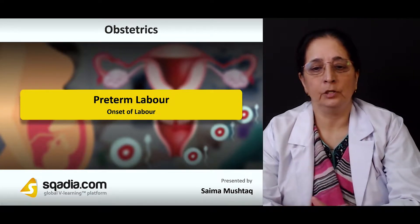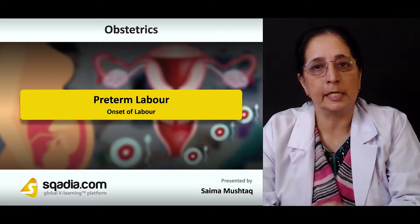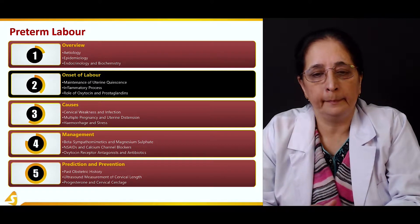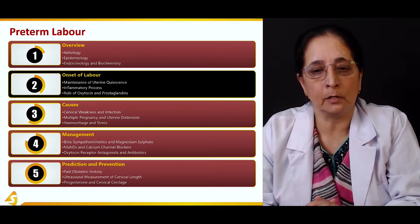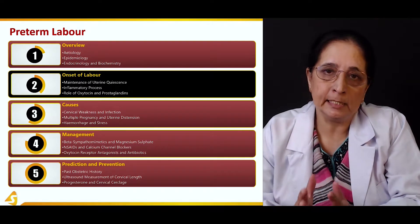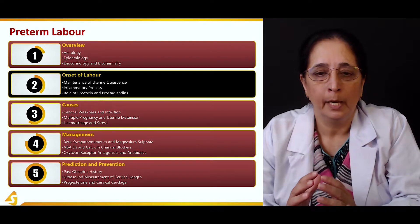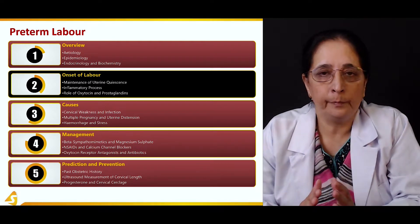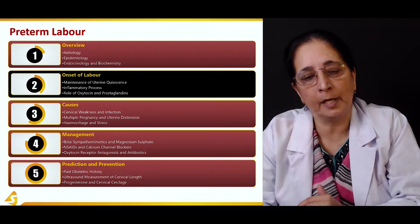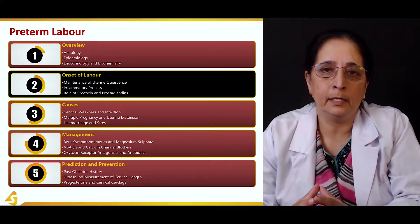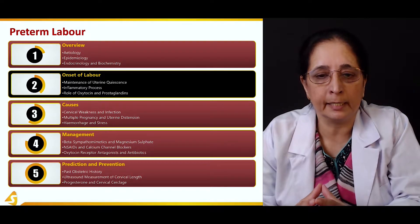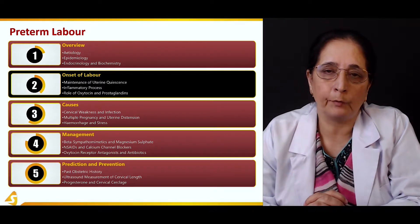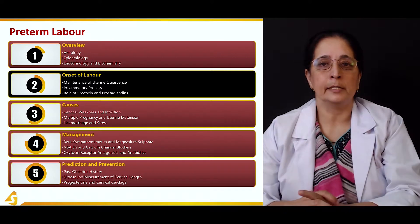In the second section of our lecture, we will start with the onset of labor. We will talk about the maintenance of uterine quiescence, which is very important to maintain the pregnancy and avoid the onset of labor. We will also discuss the inflammatory process and the role of oxytocin and prostaglandins in the onset of labor.